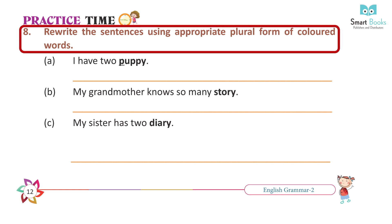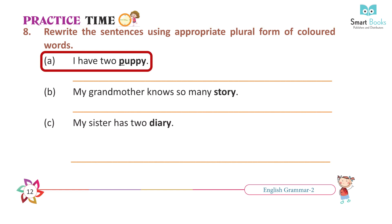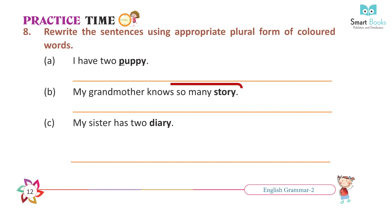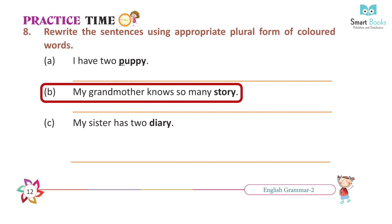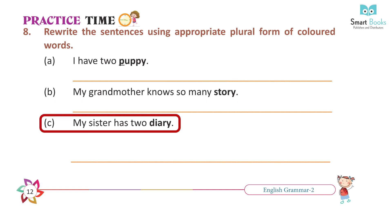Rewrite the sentences using the appropriate plural form of the nouns. A. I have two puppy. Answer: I have two puppies. B. My grandmother knows so many stories. Answer: My grandmother knows so many stories. C. My sister has two diaries. Answer: My sister has two diaries.